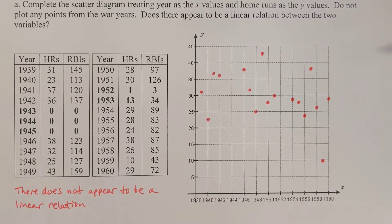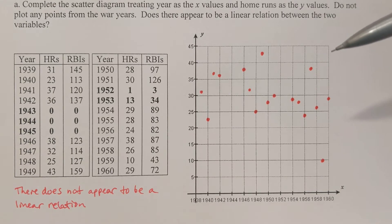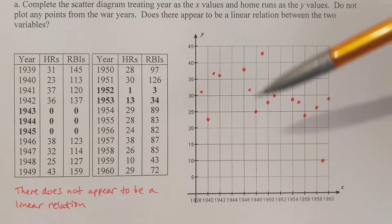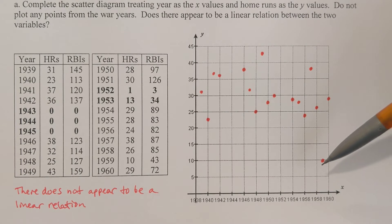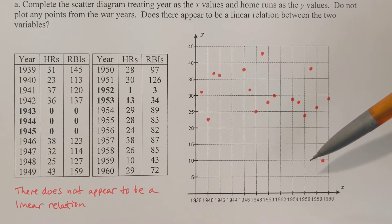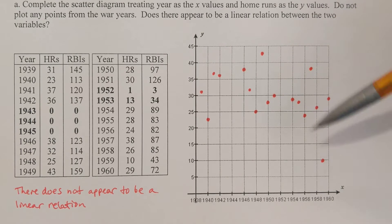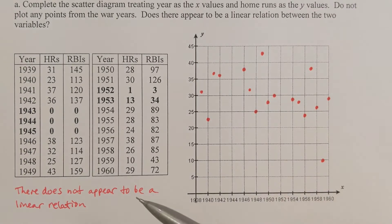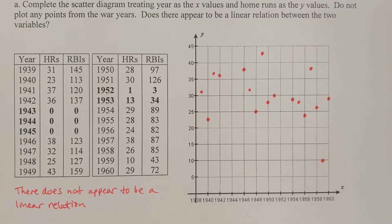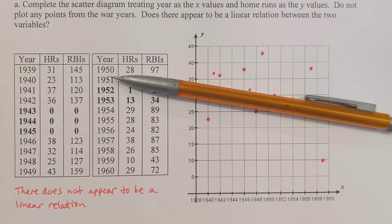I would say not really. In 1959 he only hit 10 home runs, which is way below his normal production — in 1949, for example, he hit 43 home runs. So there's a large gap, and that's going to affect our calculations. I would say there does not appear to be a linear relation. If I were to draw a line on this scatter diagram, I think a line does a poor job at representing the flow of what's going on.